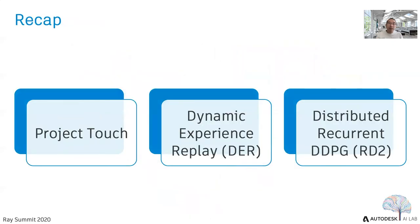In summary: Project Touch demonstrates that robots can learn to assemble timber joints based on real-time force-torque feedback using human demonstrations. Dynamic Experience Replay uses successful robotic transitions to replace human demonstrations for more accurate demonstrations in torque force tight-fitting assembly tasks. Distributed Recurrent DDPG — RD2 — solves partially observable assembly tasks using only torque force readings from the end-effector as observations, and outperforms other state-of-the-art algorithms in several assembly tasks.